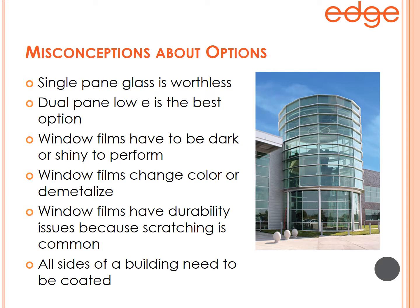What are some misconceptions about the options? One is that single-pane glass is worthless — when in fact a single-pane glass with window film is often the best and most economical solution. Another is that dual-pane low-e is always the best option; on a south elevation in a northern climate, you may actually want that free heat. Other misconceptions: that window films have to be dark or shiny, that they will change color or demetalize, that they have durability issues from scratching, and that all sides of a building need the same film.